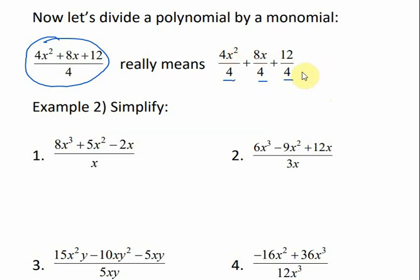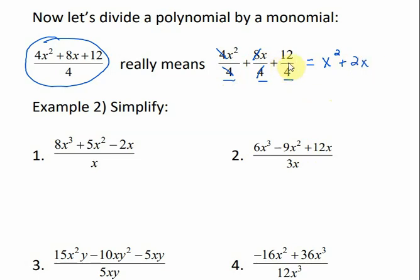Once we split it up, we take each part: 4 divided by 4 divides out, leaving x squared. 4 will go into 8 two times, so that's plus 2x. And 12 divided by 4 is 3. That would be my solution.